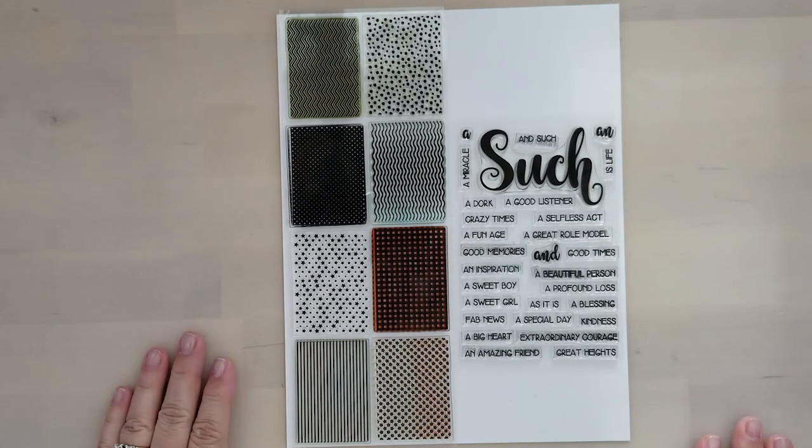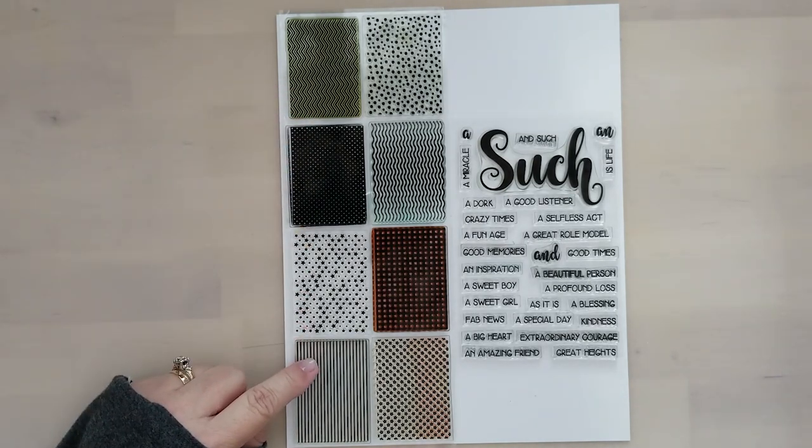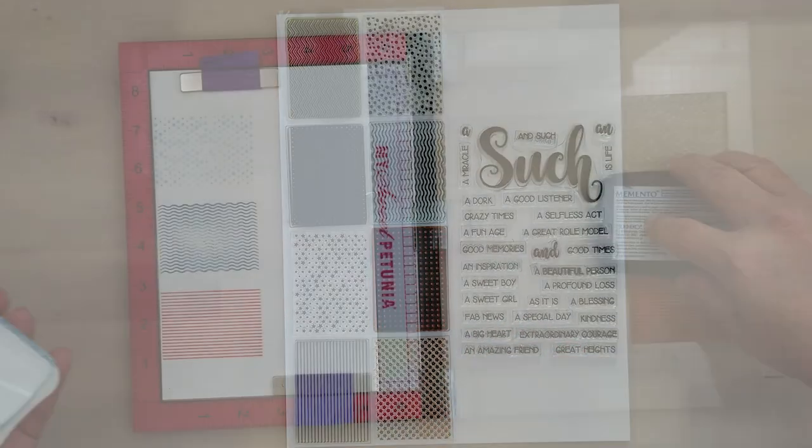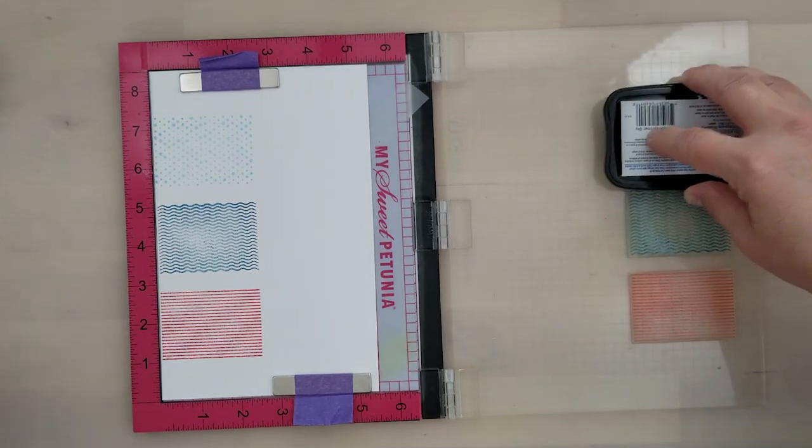Here's a quick look at the Micro Pattern stamp set and the Such and Such stamp set. Now I think it's fairly easy to see how both of these products are going to be great crossover products. The Micro Patterns is a 4x11 stamp set and the Such and Such is a 4x6 stamp set.